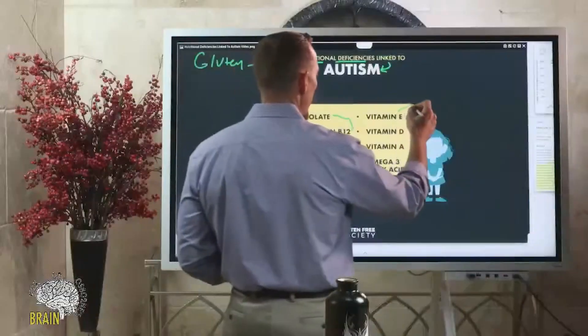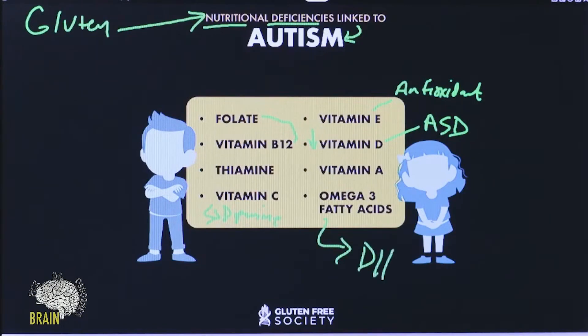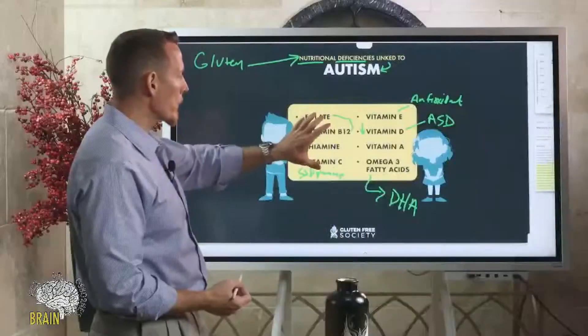Vitamin E is a very potent antioxidant, protects the structures of the brain from becoming damaged, very important for development. A number of research studies connect poor brain development with vitamin E. We know that vitamin D, there have actually been studies that show autism spectrum disorder children that are diagnosed tend to have vitamin D deficiencies. We know vitamin A, the same thing, and then omega-3 fatty acids, particularly the subfraction of omega-3 called DHA, docosahexaenoic acid, very important for brain formation. So these are super common.